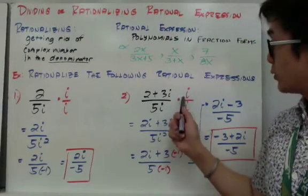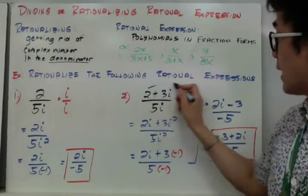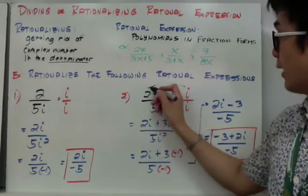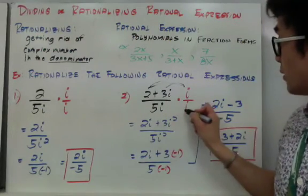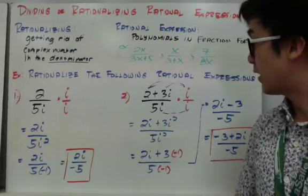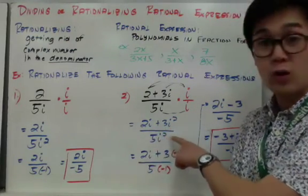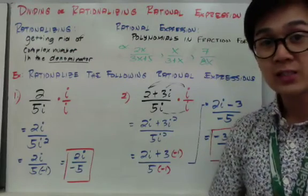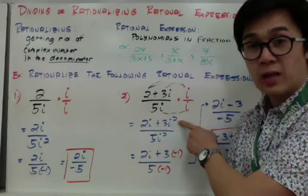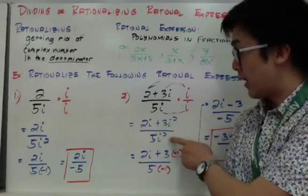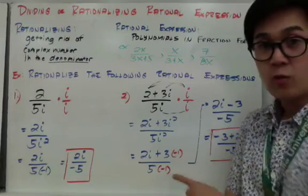When we distribute i to 3i: 2 times i is 2i, and 3 times i is 3i squared. And if we distribute i to 5i, it's simply 5i squared. So we have 2i plus 3i squared all over 5i squared. The next step is to get rid of all the i squareds — we change i squared into negative 1.